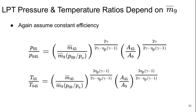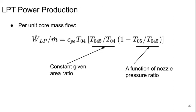The low-pressure turbine pressure and temperature ratios, then, are also not just functions of geometry, but depend on M bar 9, which itself is a function of P0 9 over PA. Again, this assumes constant efficiency. And the power production from the LP turbine per unit of core mass flow is going to be a product of two factors, the first of which is going to be constant, and the second of which is going to be a function of the nozzle pressure ratio.